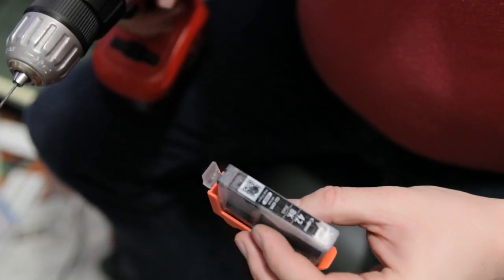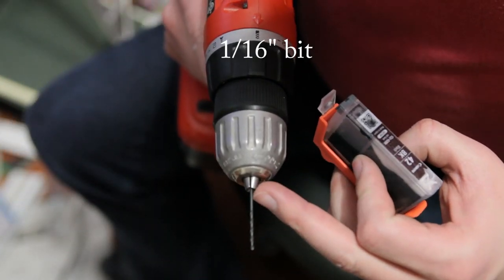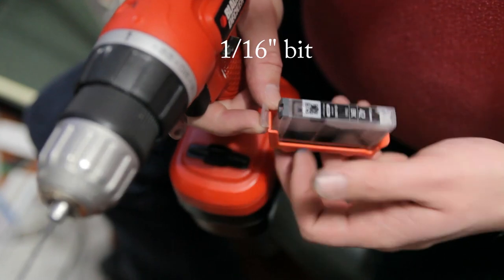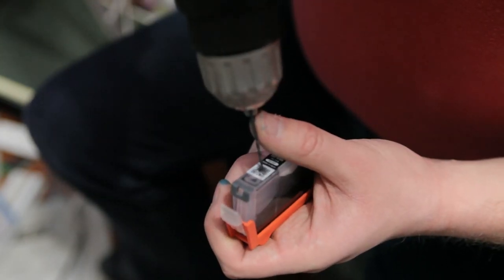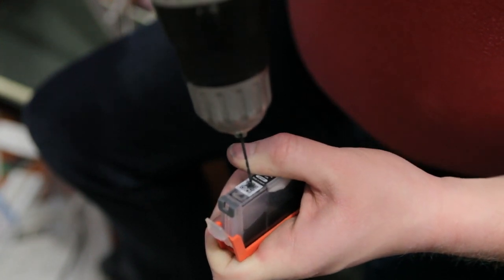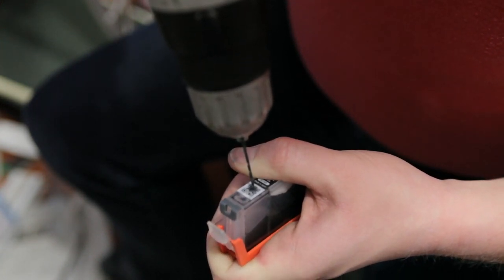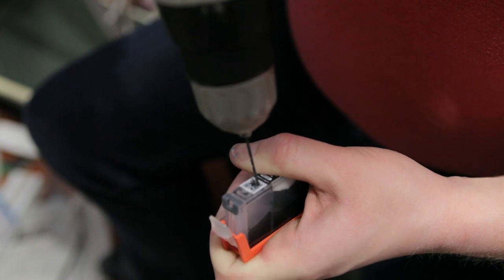Alright, at this point I like to take a 1/16th of an inch drill bit and just very carefully drill a hole right in the center of that ball, not getting it in the cartridge, just in the center of the ball.